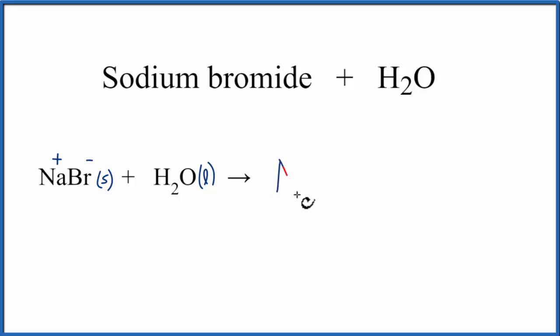We'll end up with Na plus and Br minus. That's the sodium cation and the bromide anion.